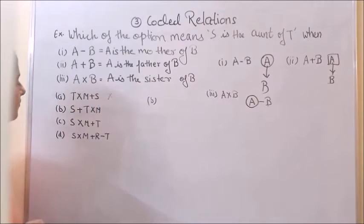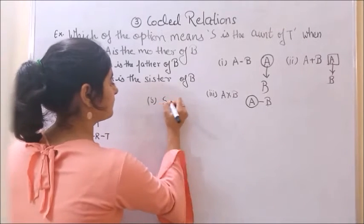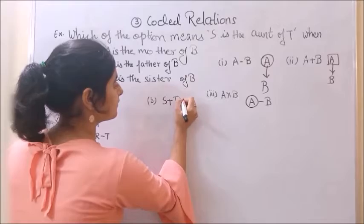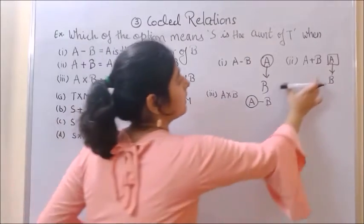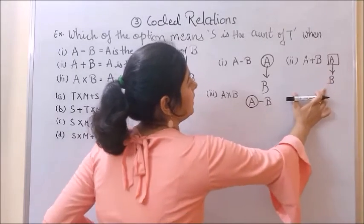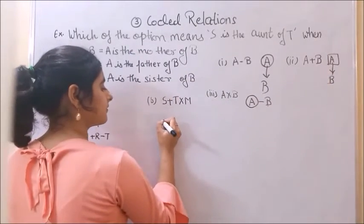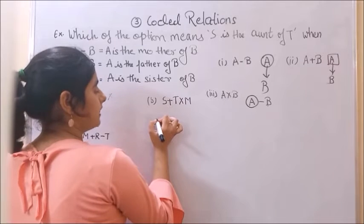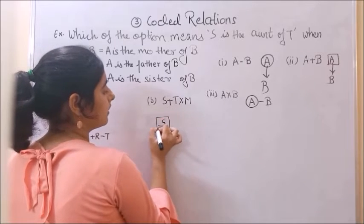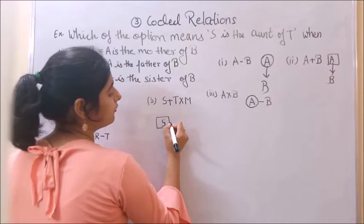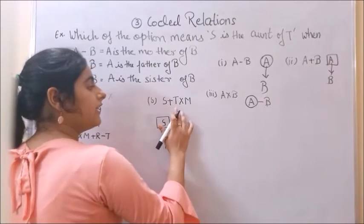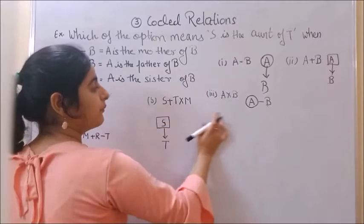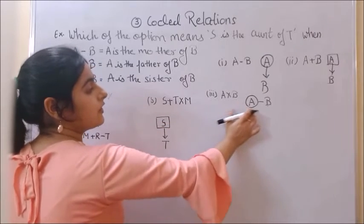Option B is S plus T into M. S plus T is S is the father of T. S is the father of T. T into M means T is the sister of M.